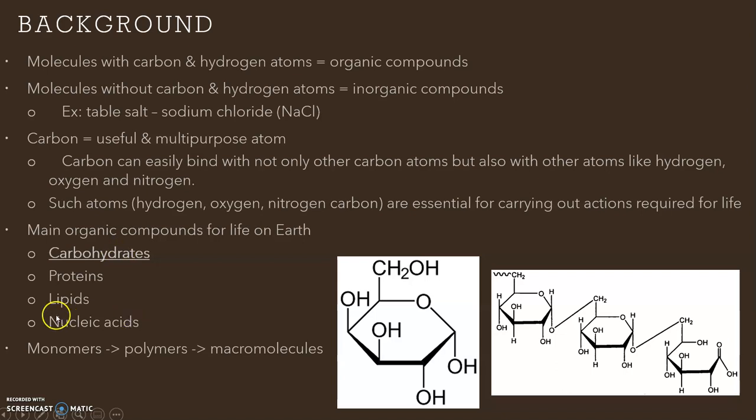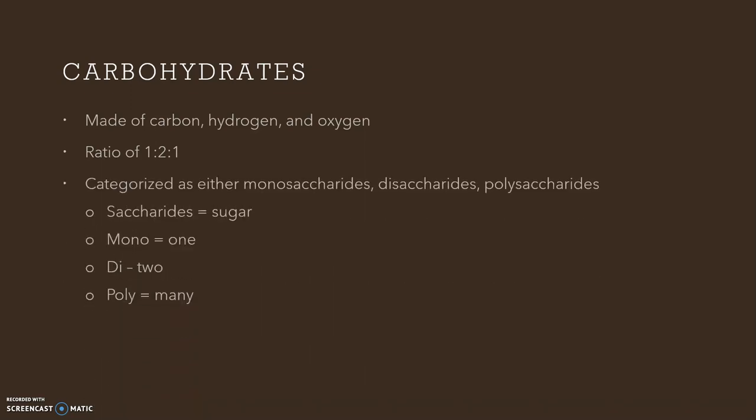Today we'll be focusing on the specific macromolecule which includes carbohydrates. Carbohydrates are made of carbon, hydrogen, and oxygen. The ratio is one to two to one. They're categorized as either monosaccharides, disaccharides, and polysaccharides. Saccharides is a common term and basically means sugar. Mono is one, di is two, and poly is many. So monosaccharides are basically one sugar carbohydrate.